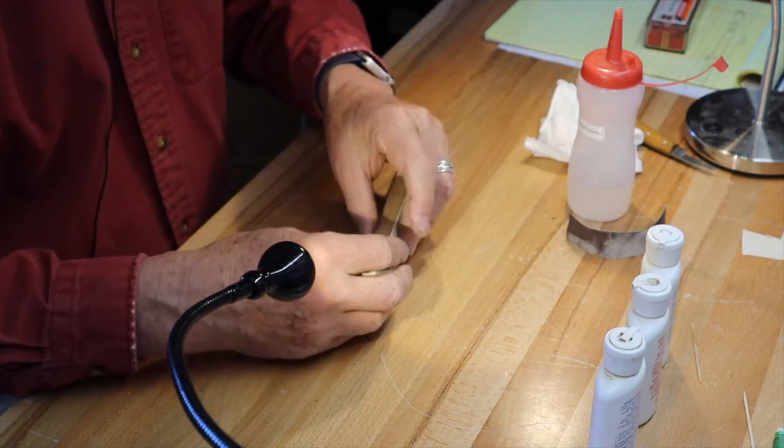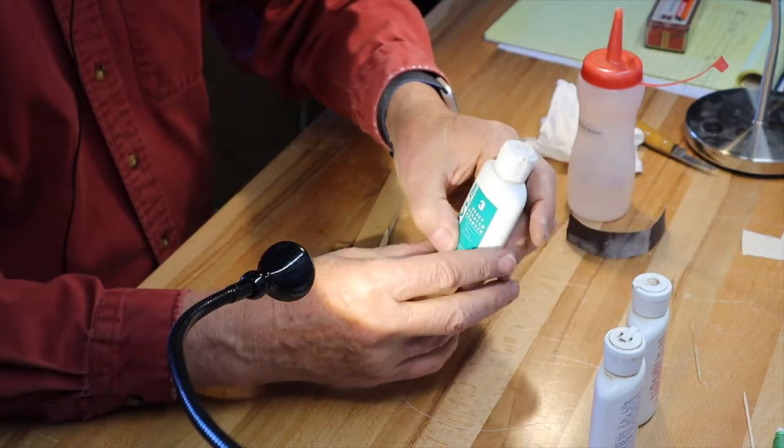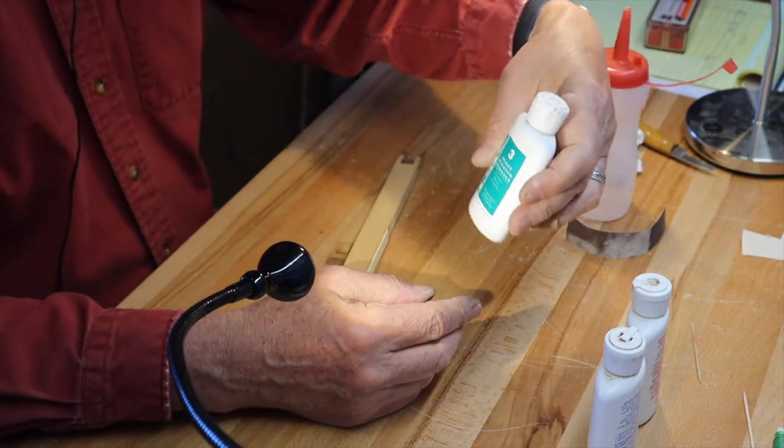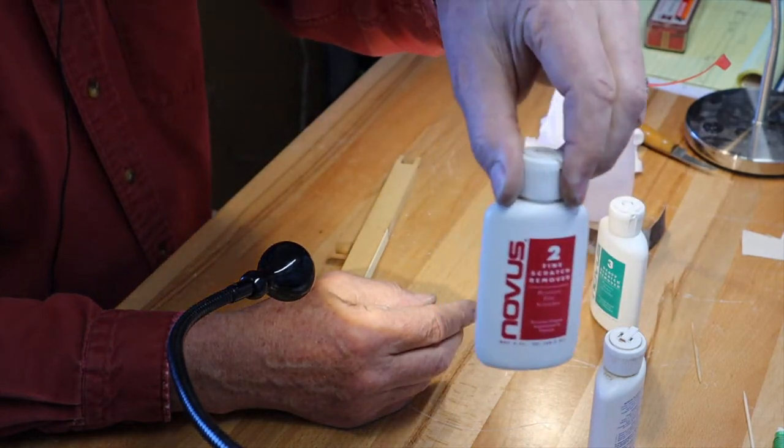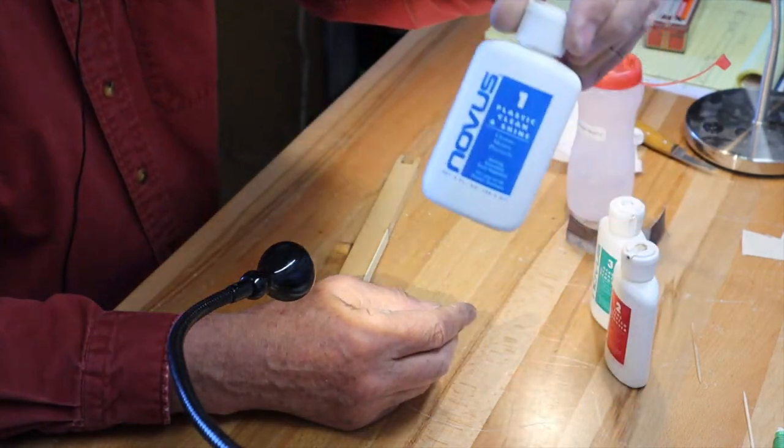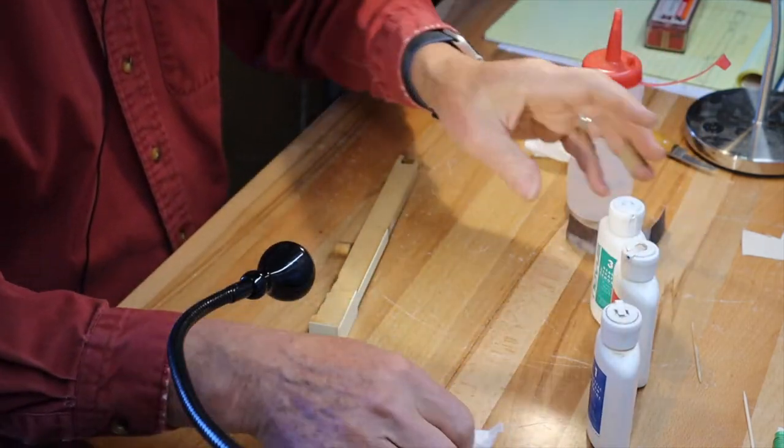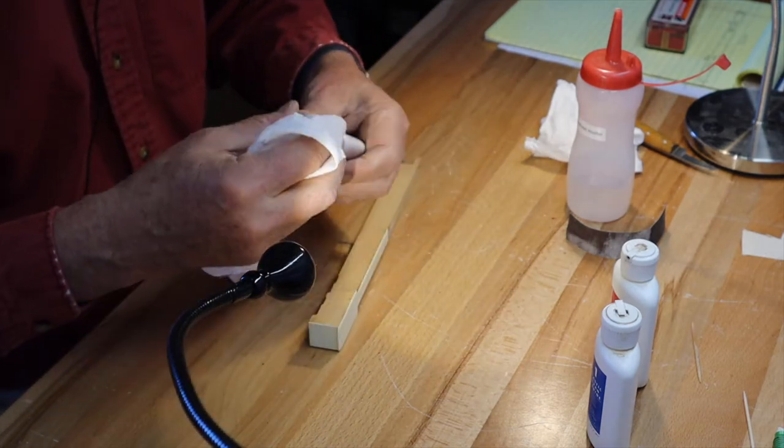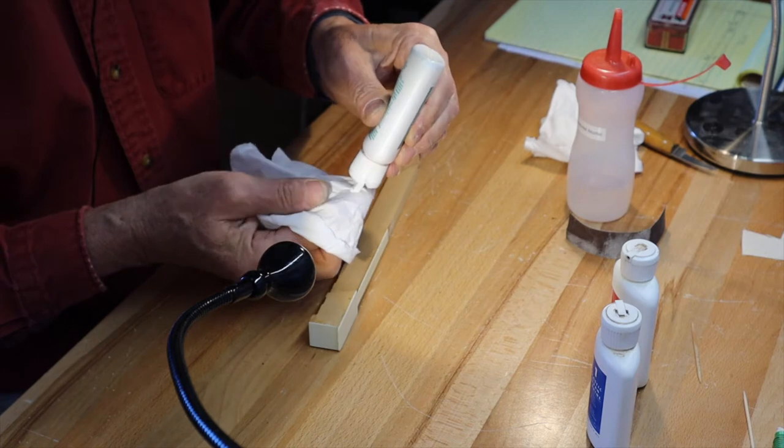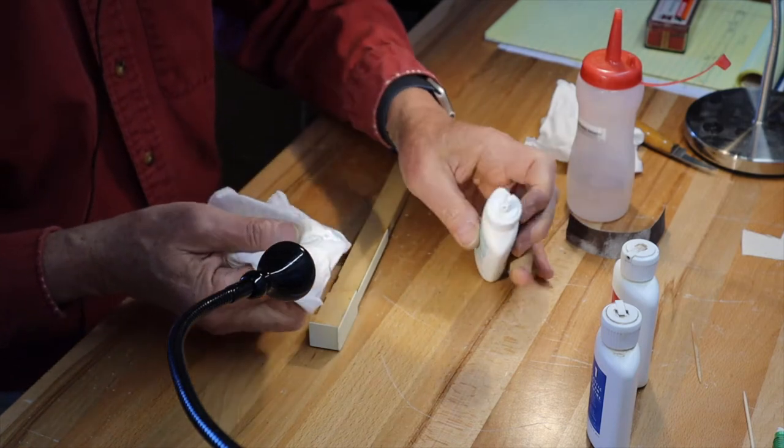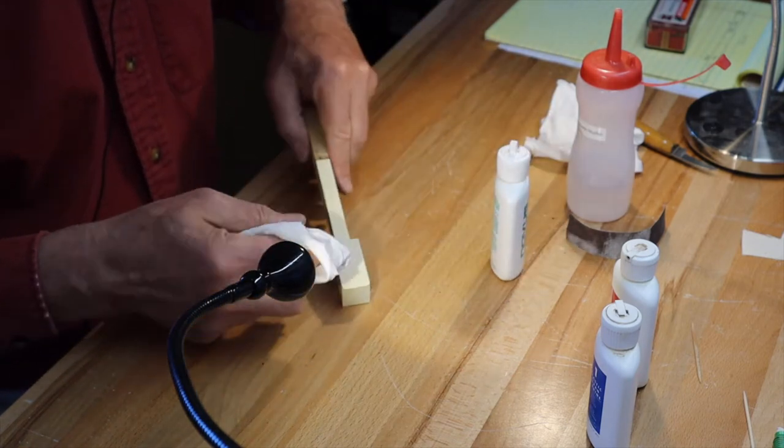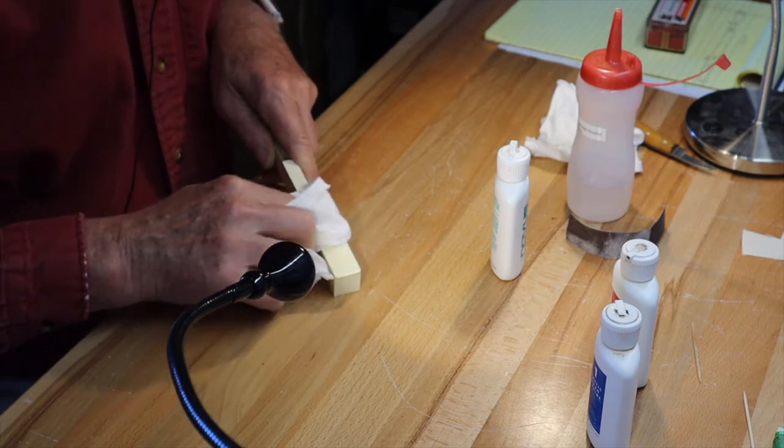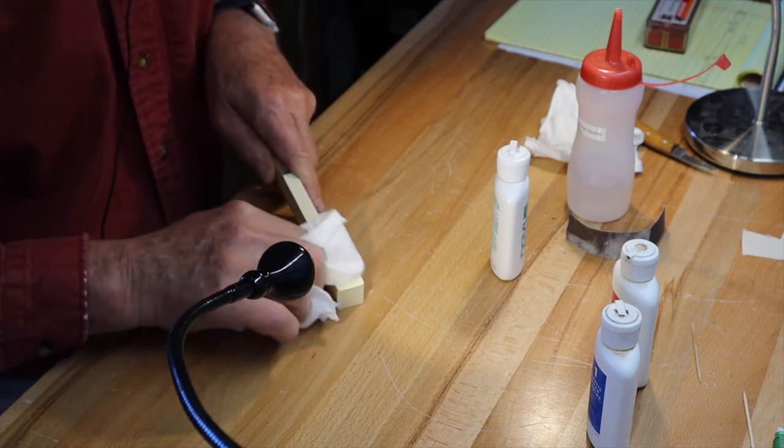Now to get the gloss back on, I'm using Novus plastic polish (N-O-V-U-S). It's got three different solutions: a heavy scratch remover, a fine scratch remover, and a cleaner. This is used for any sort of plastics. Just a little blob of it about the size of a BB, and just rub it on. You can feel it getting smoother as you go.